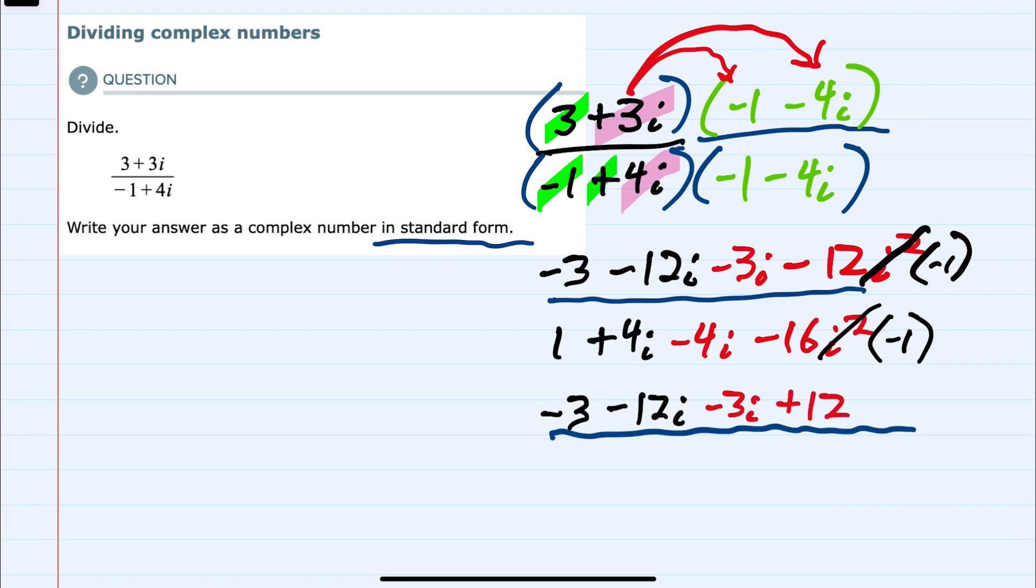And in the bottom, we have 1 plus 4i minus 4i. This minus 16i squared is now plus 16. And we can then combine like terms.